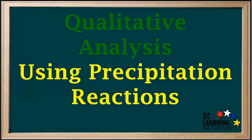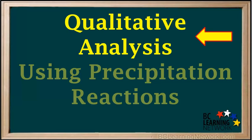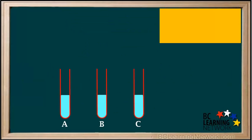In this video, we'll show you how you can use precipitation reactions to help identify what ions are present in an unknown sample of an ionic solution. Identifying ions in a solution is called qualitative analysis.